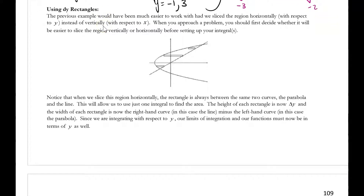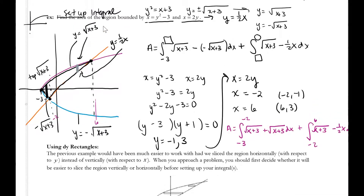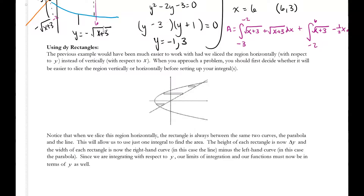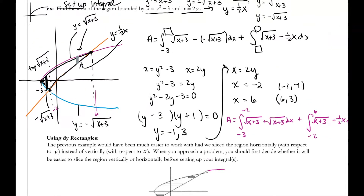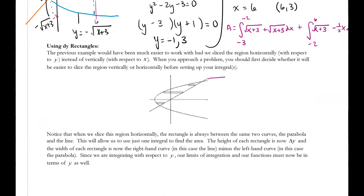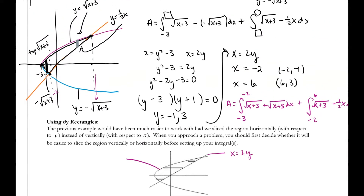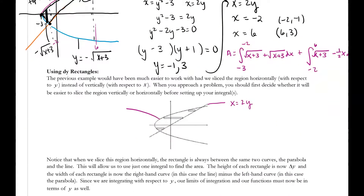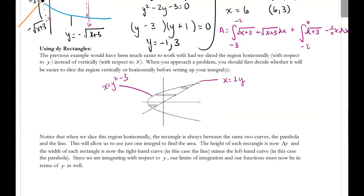In an earlier video we referenced dx rectangles; now we're going to talk about dy rectangles. I'm going to go back to the last example we set up the integral for and resketch it. The equation of the line is y equals one-half x, but originally it was x equals 2y. The sideways parabola, instead of breaking it into two separate pieces, can be captured as a whole if we write it as x equals y squared minus 3.